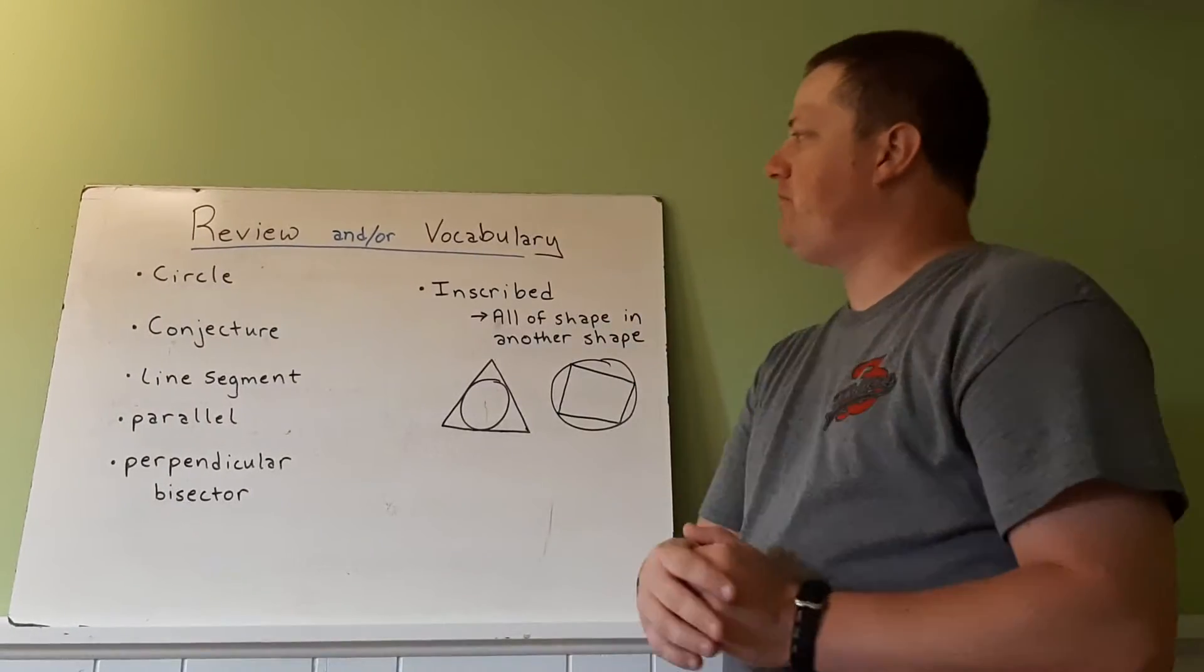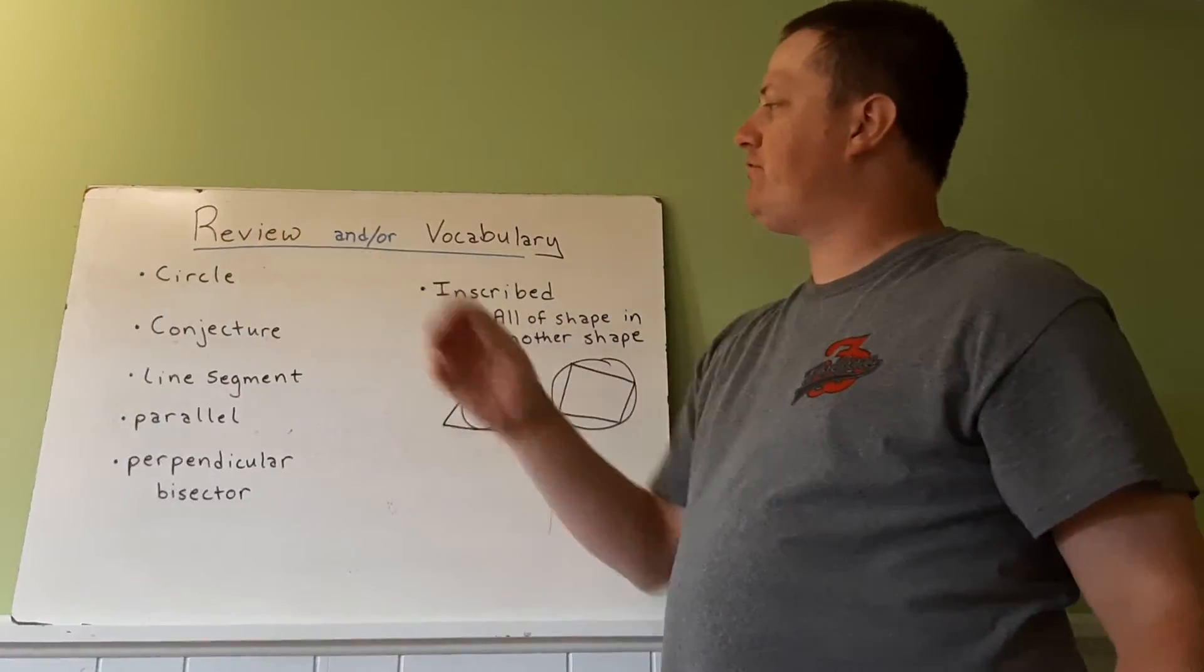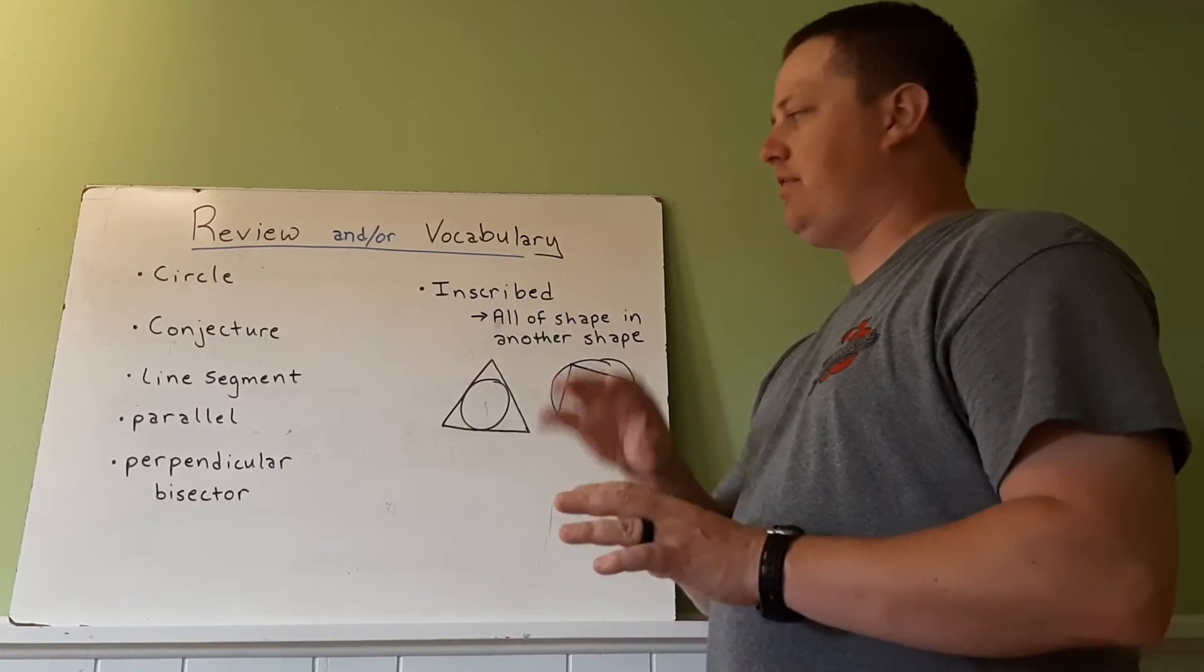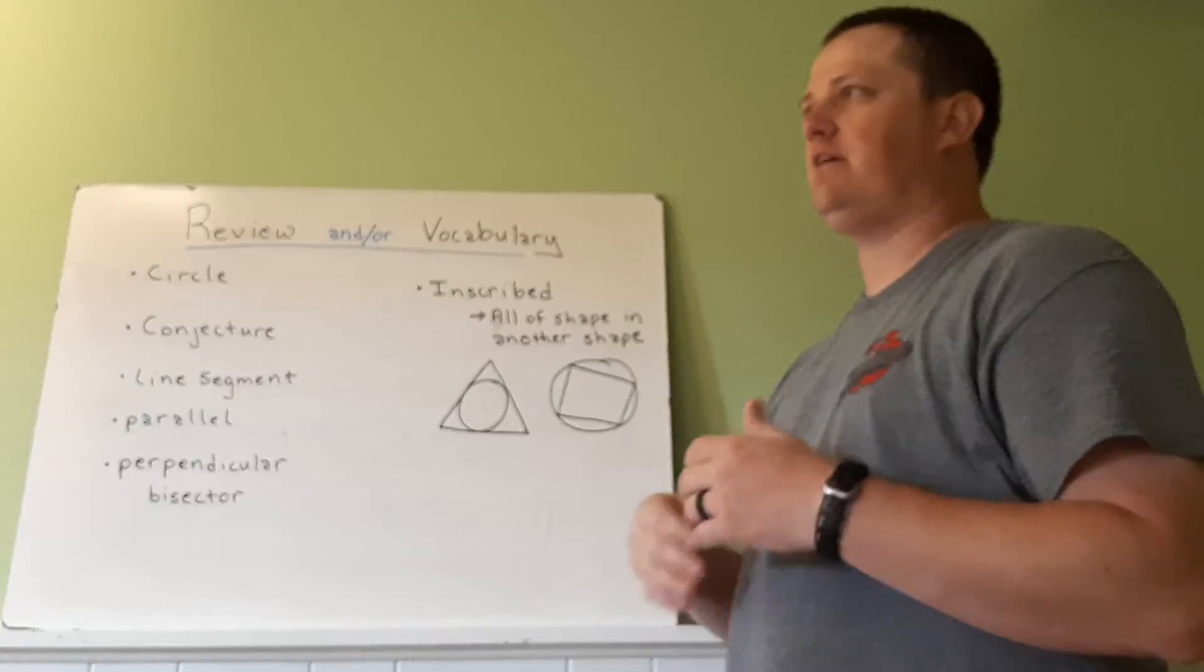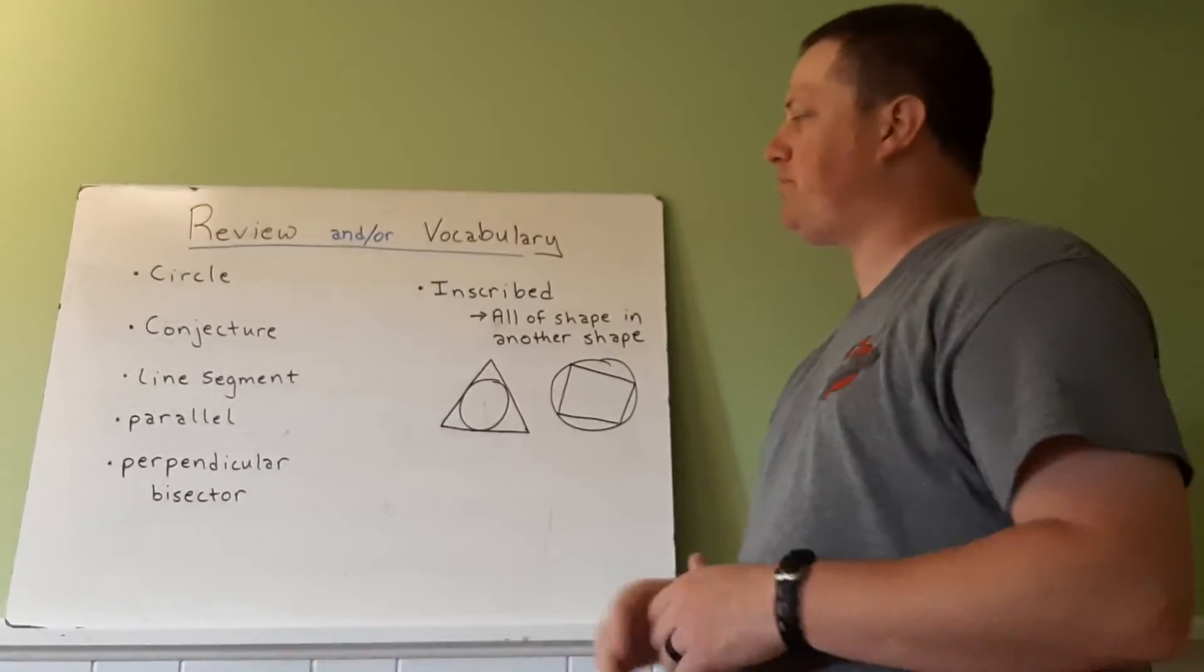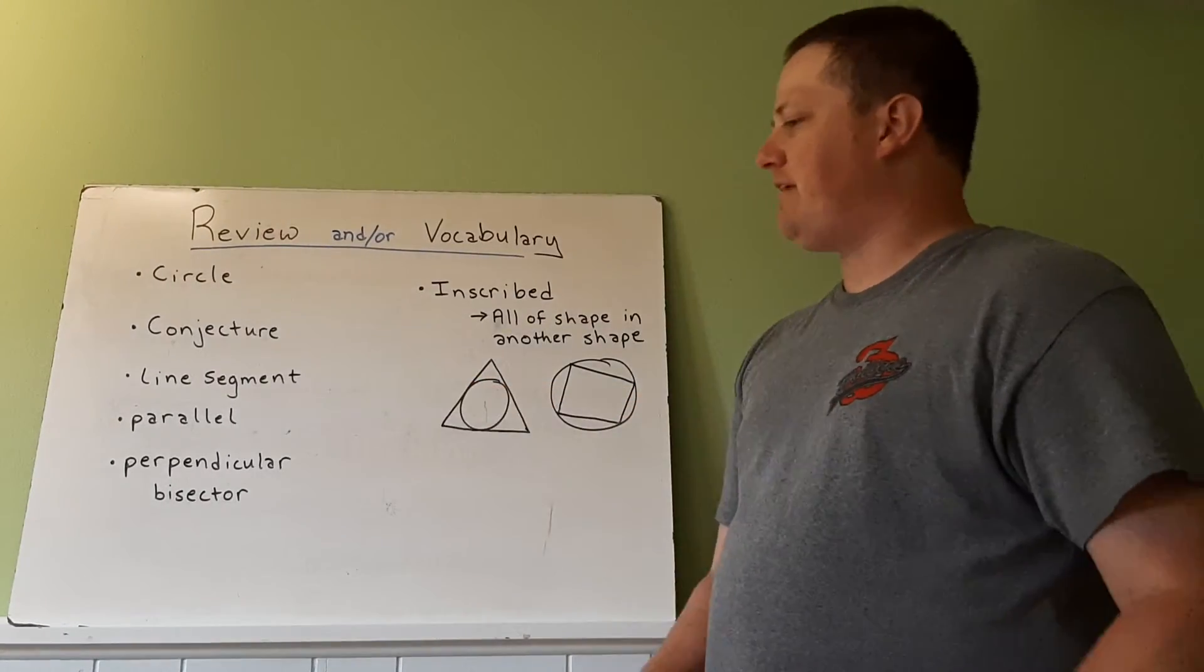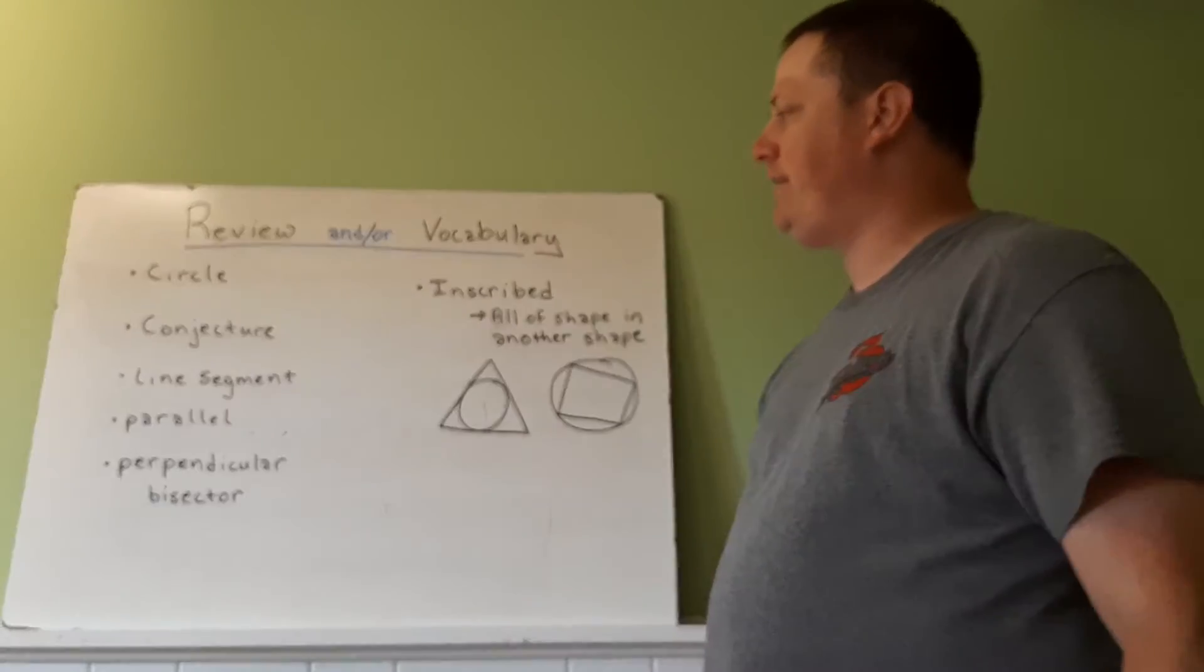Some review vocabulary here. Circle, which remember is all the points the same distance from a center. Conjecture, which is like a hypothesis or something we're trying to prove or disprove. A line segment, which is a straight line with two endpoints.